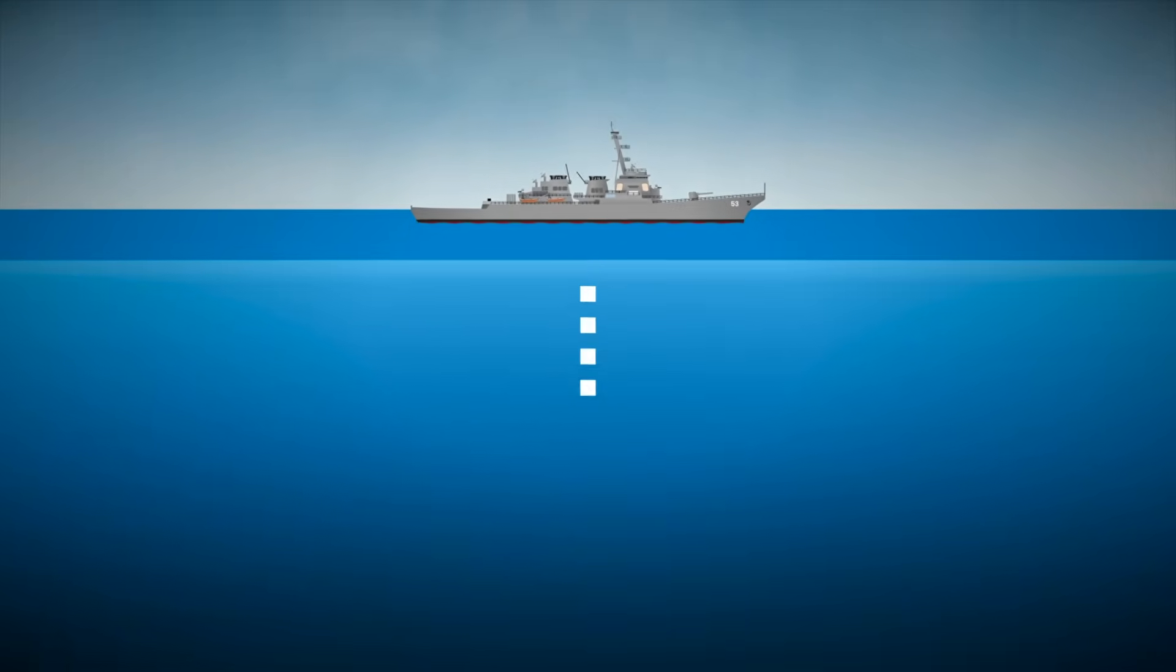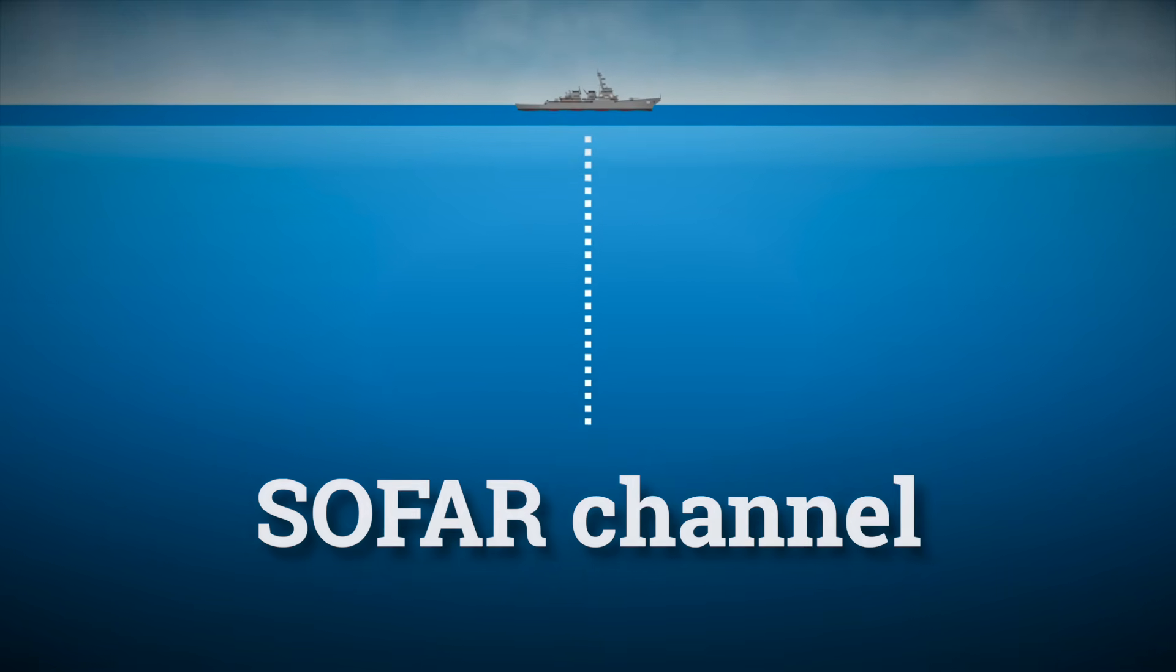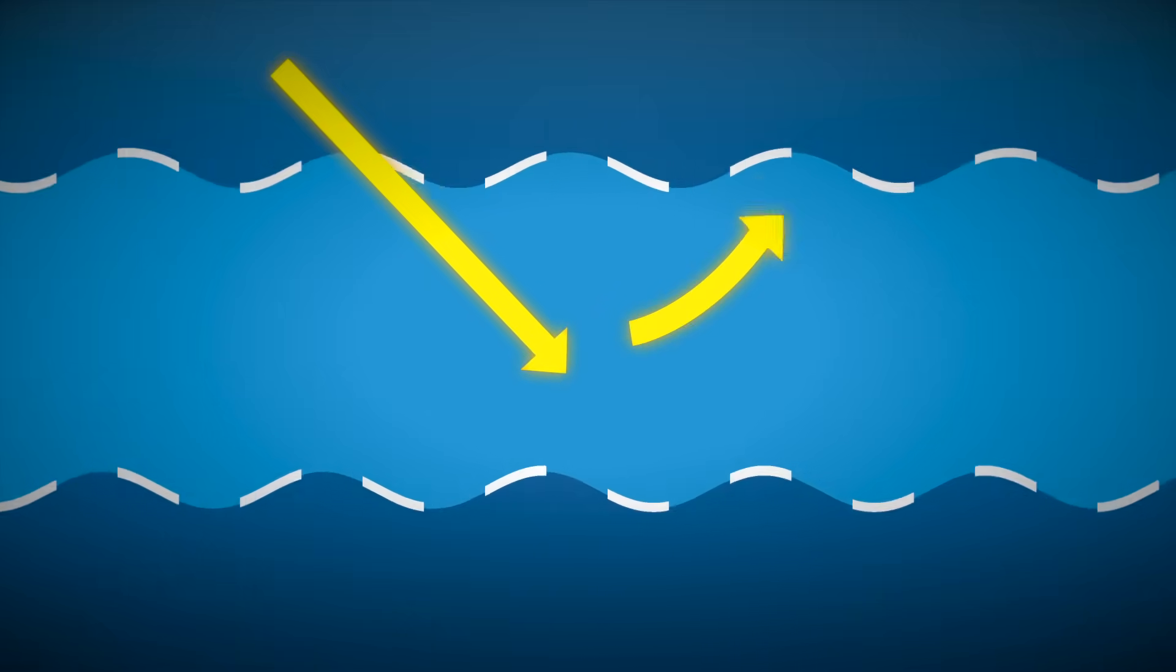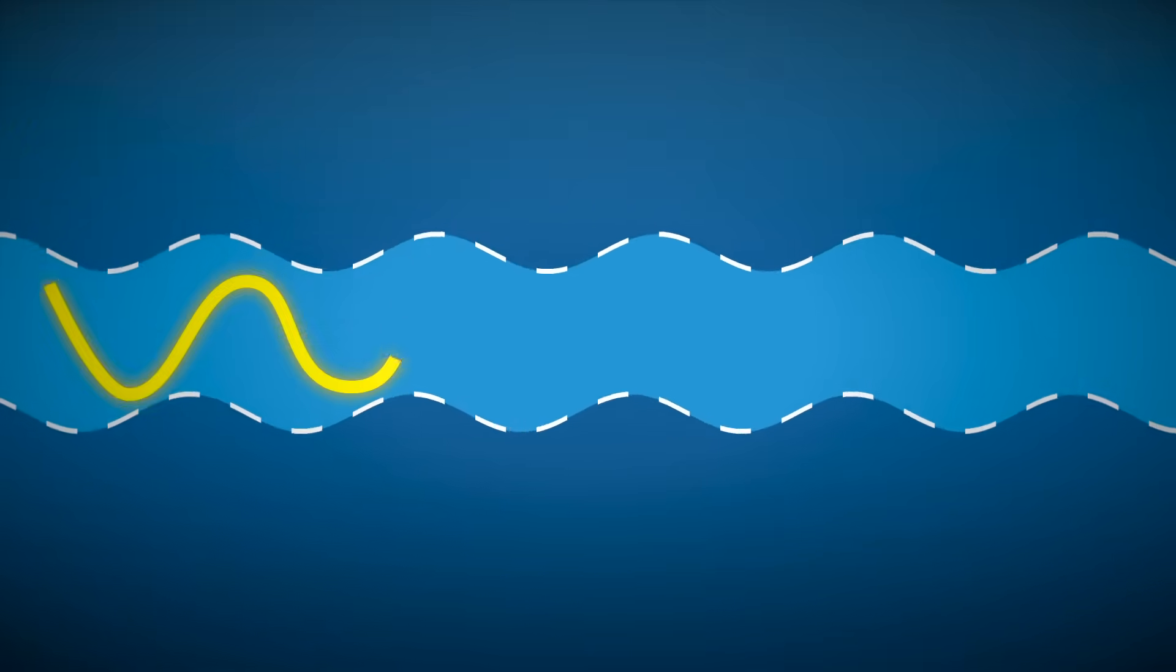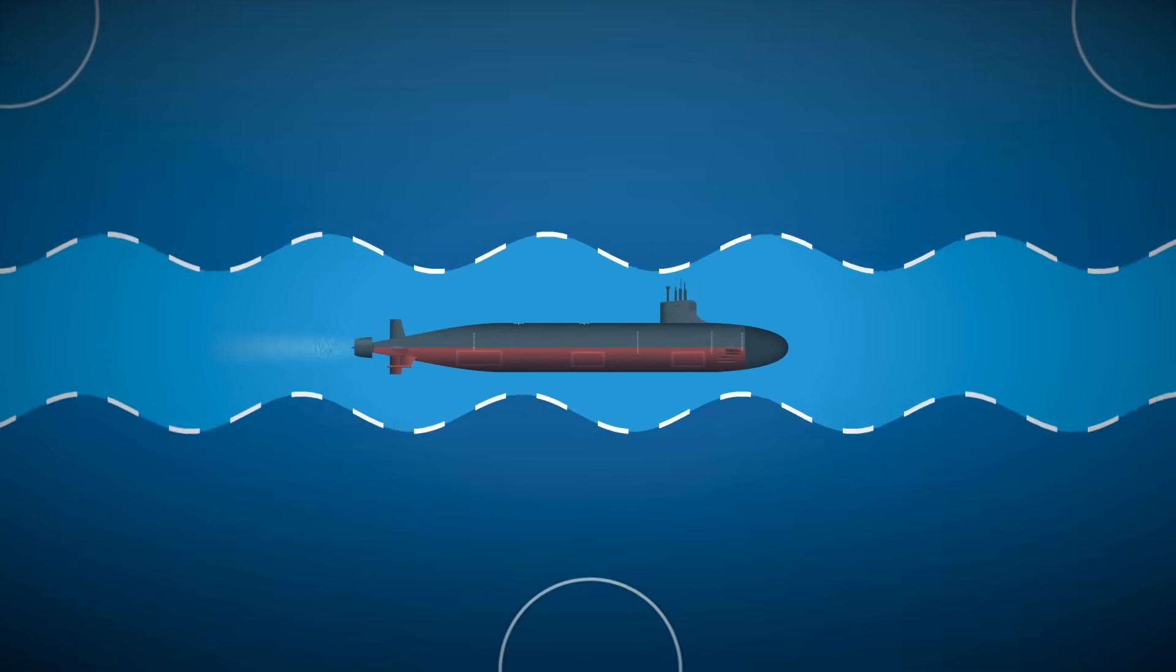Even deeper, there's an even more interesting feature called the deep sound channel, or the SOFAR channel. It's a horizontal layer in the ocean where sound speed reaches a minimum, and then increases both above and below. This makes the sound waves bend back toward the center of the channel, allowing them to travel thousands of kilometers with minimal loss. Submarines can hide here to listen for distant ships or other subs, but it's a double-edged sword. If they make a noise, that sound can travel just as far.